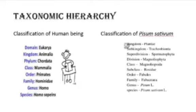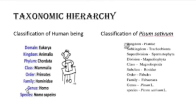For example, consider the classification of a human being. A human being belongs to the domain Eukarya and the kingdom Animalia. It belongs to the phylum Chordata, the class Mammalia, and the order Primate. The family of a human being is Hominidae, the genus is Homo, and the scientific name is Homo sapiens.